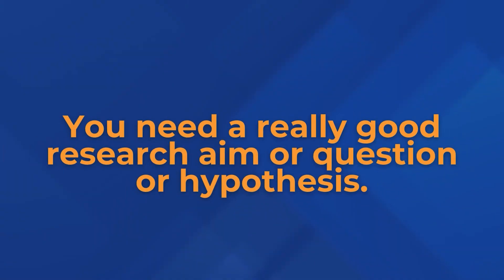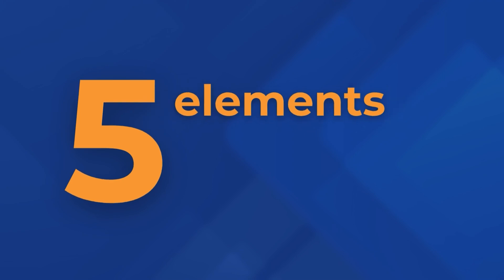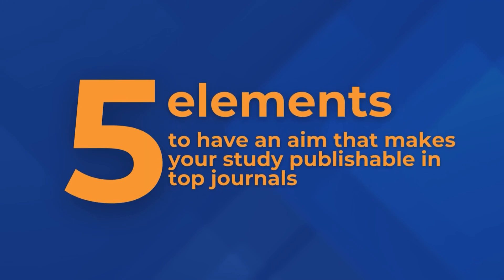If you want to publish research papers in high-impact Scopus-indexed journals, the number one thing you really need is a really good research aim, question, or hypothesis. No matter how well you structure your research paper or how good your language is, if you don't have a high-impact research aim, your paper will never be accepted in those top journals. In this video, I want to show you the five elements you need to get right in order to have an aim that makes your study publishable.